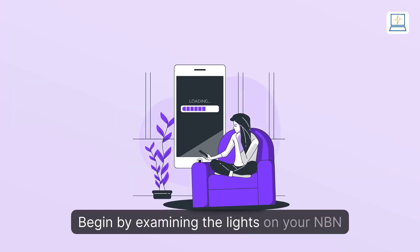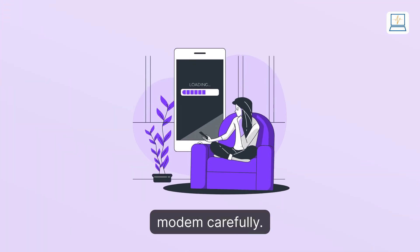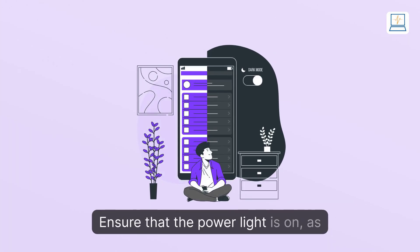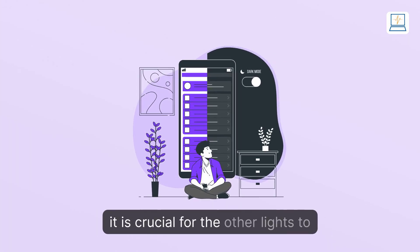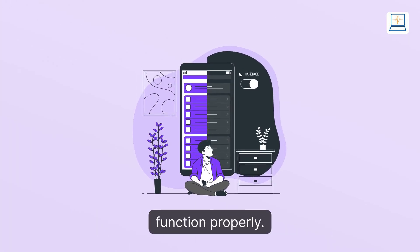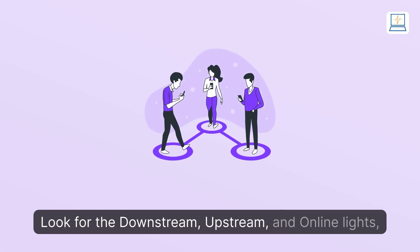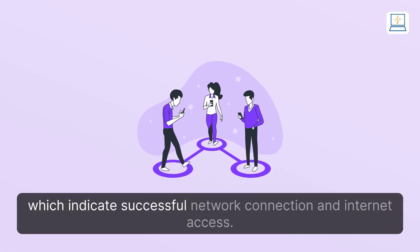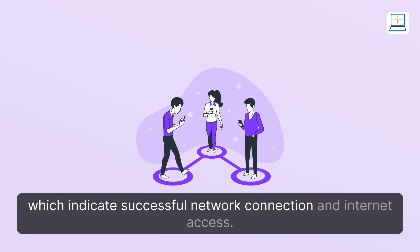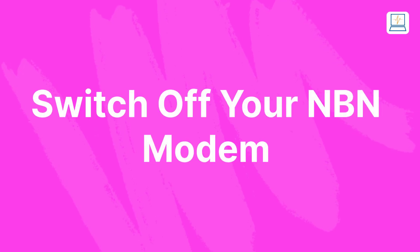Check the lights again. Begin by examining the lights on your NBN modem carefully. Ensure that the power light is on, as it is crucial for the other lights to function properly. Look for the downstream, upstream, and online lights, which indicate a successful network connection and internet access.